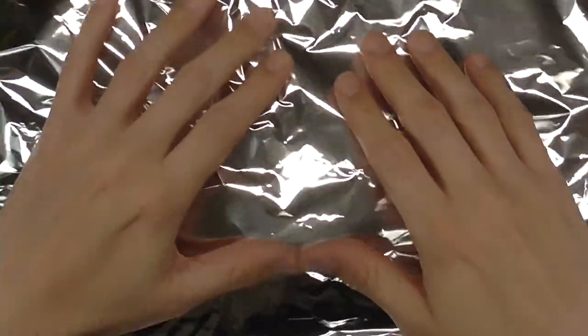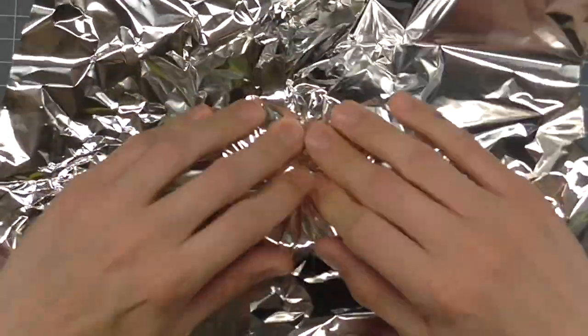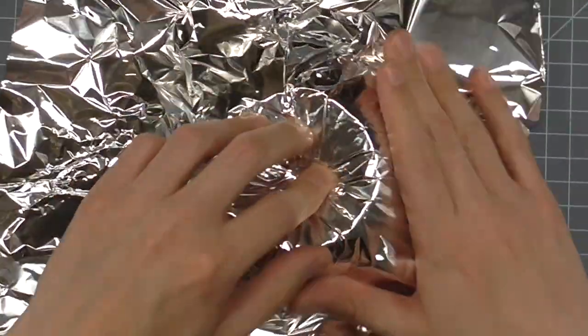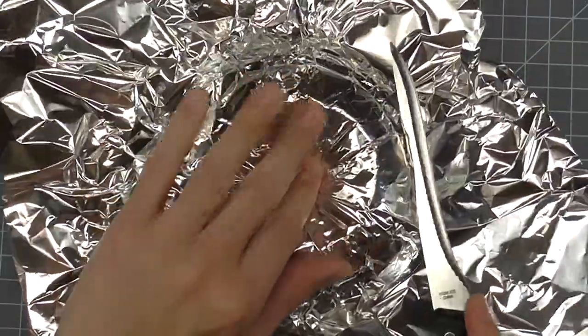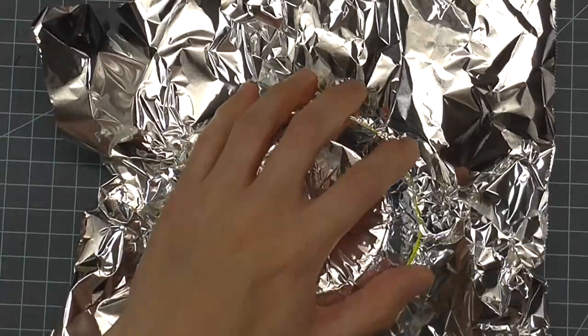Repeat this process with the other block, only now you have to worry about the indentation. Press into the center and smooth out from the center. Use the back of the knife to press in the aluminum foil while you press down in the center of the indentation.